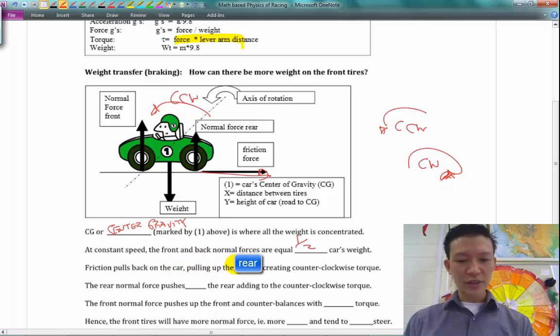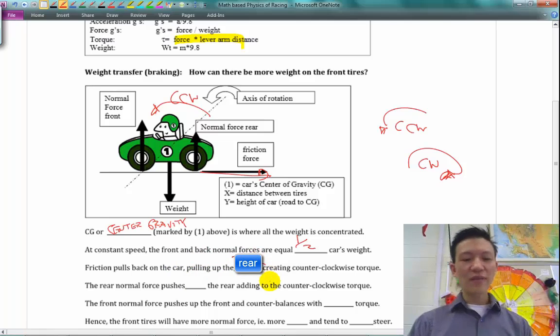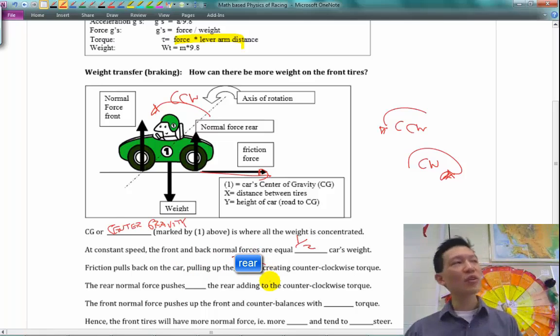So what happens is, if you shift your weight forwards, you're going to pull up which tires? The rear tires. So what that means is, in real life, why is that important? You lose grip on the back tires.